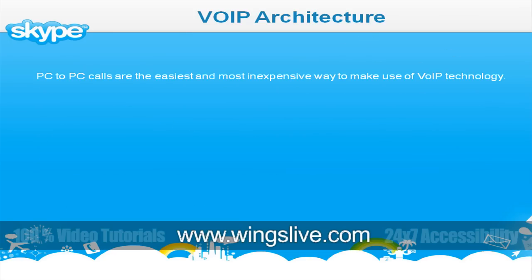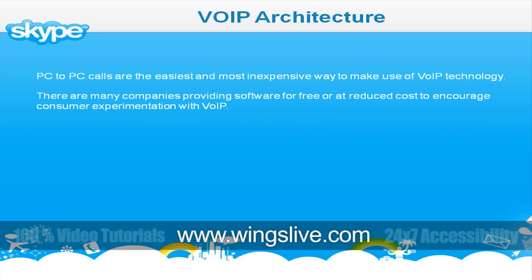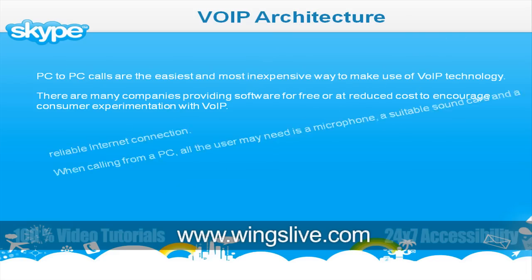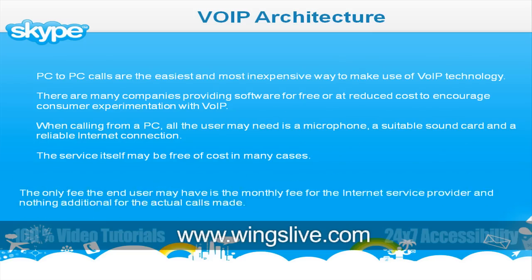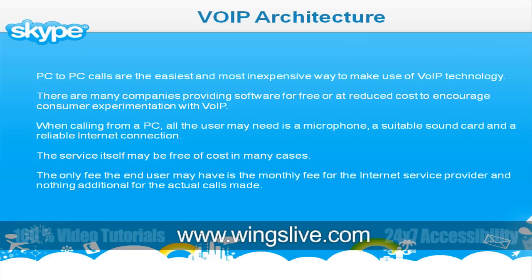PC-to-PC calls are the easiest and most inexpensive way to make use of VOIP technology. Many companies provide software for free or at reduced cost to encourage consumer experimentation with VOIP. When calling from a PC, all the user may need is a microphone, a suitable sound card, and a reliable Internet connection. The service itself may be free of cost in many cases — the only fee may be the monthly fee for the Internet service provider, with nothing additional for the actual calls made.